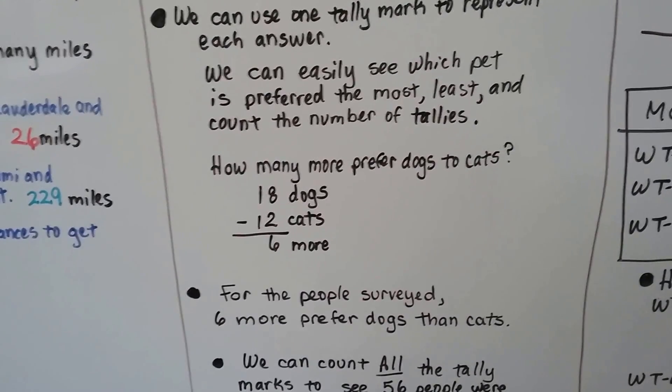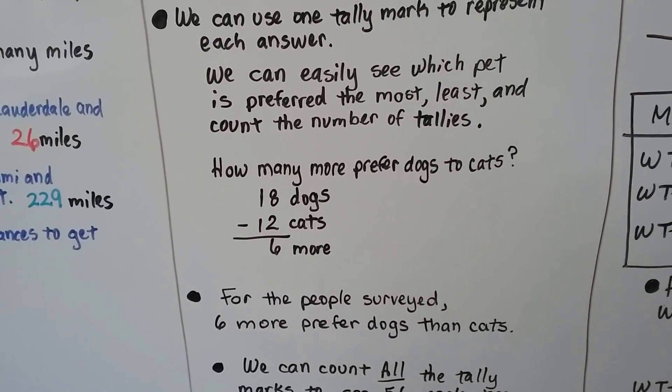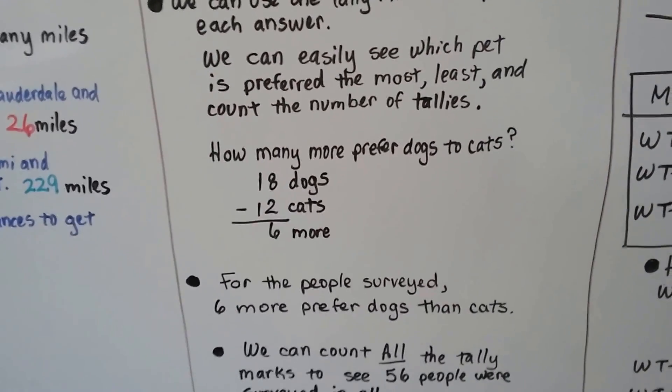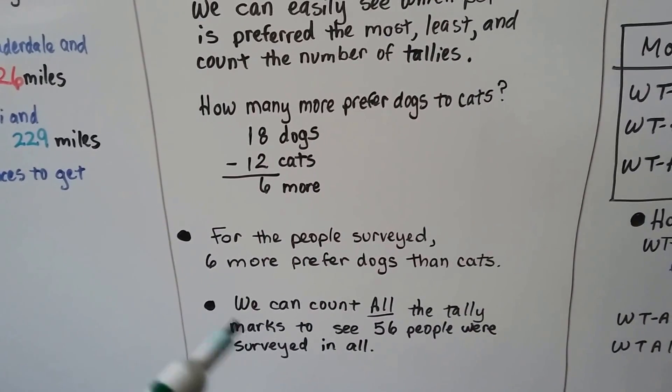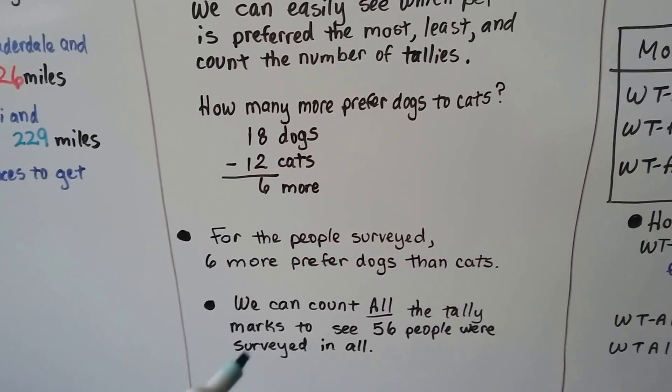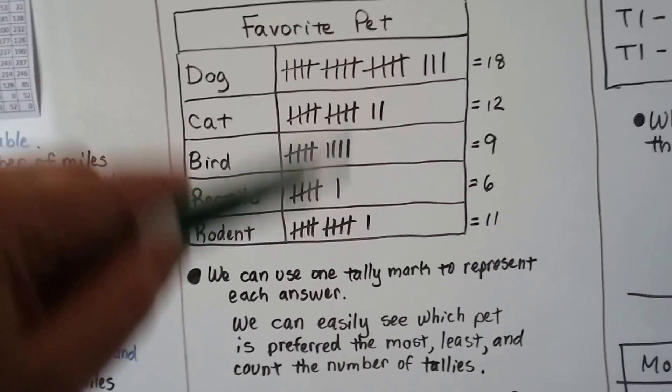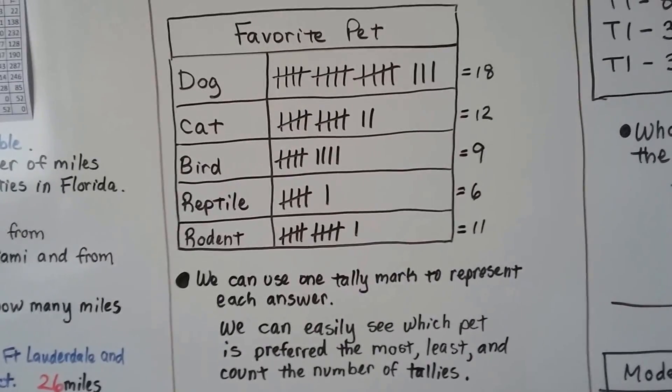Now you may survey 50 other people and you may get rodents as the preferred answer. It just depends on who you're asking, right? We can count all the tally marks to see that 56 people were surveyed in all. So by counting every single tally mark, we know how many people were asked.